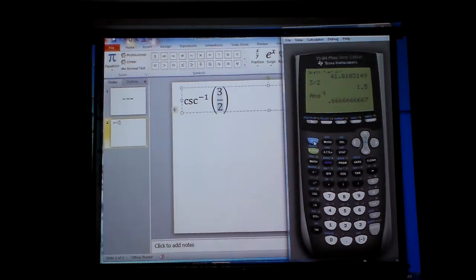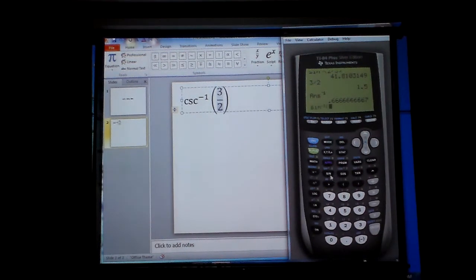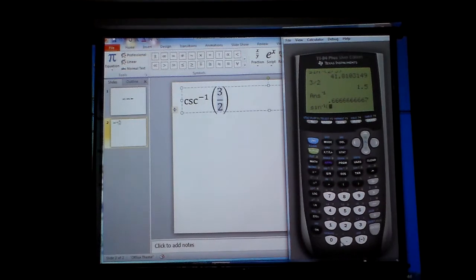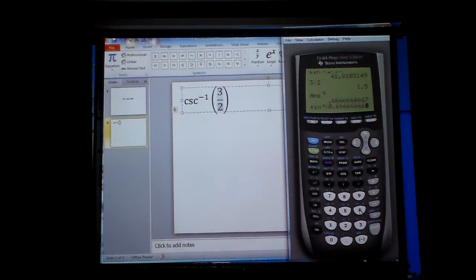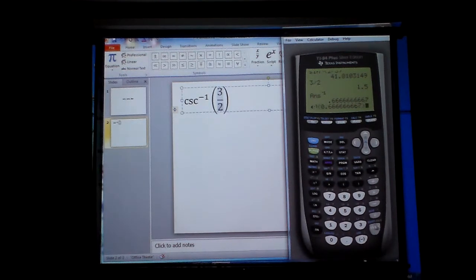And it gives you this. Now what I would have to do is go to second sine and put in this 0.6666666667. Close the parenthesis, and notice I have 41.8.